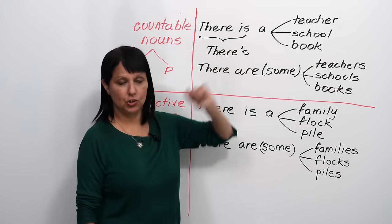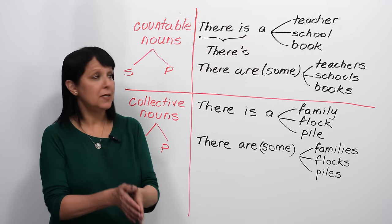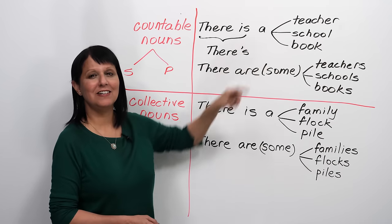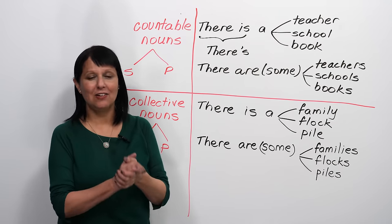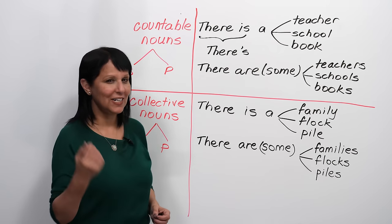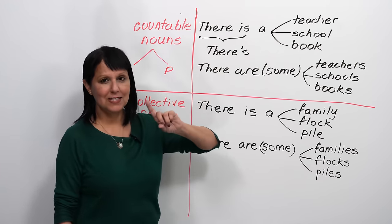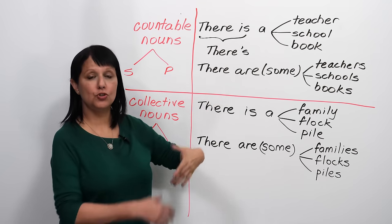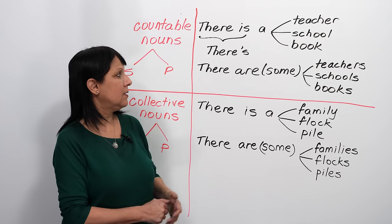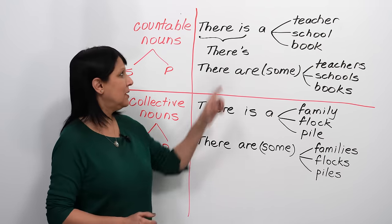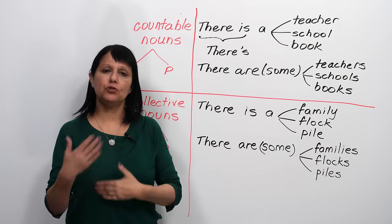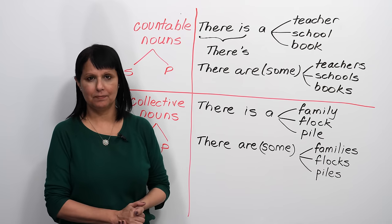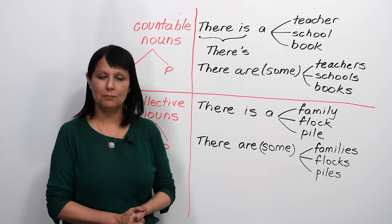'There is a teacher in the classroom.' When talking about one noun, we need to use the article 'a,' because in lots of languages that article doesn't exist, so don't forget that. It's not only 'there is,' but if it's singular and countable, you have to say 'there is a teacher in the classroom,' 'there is a school on the corner,' 'there is a book on the table.' Usually when we're speaking, we contract it: 'there's a book on the table.' Say it after me: 'There's a book on the table.'